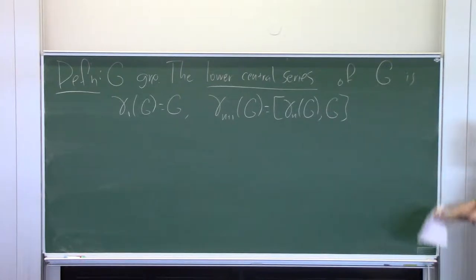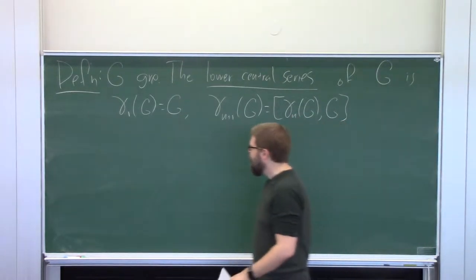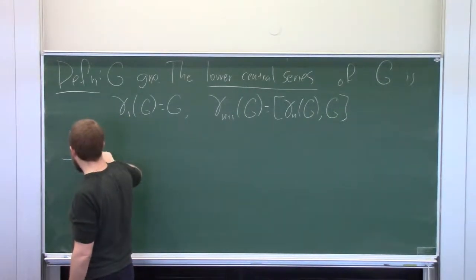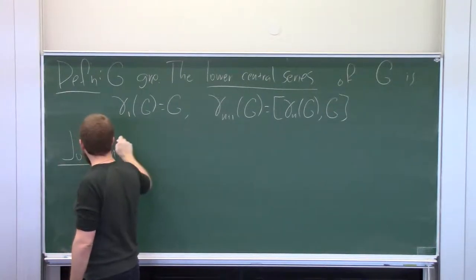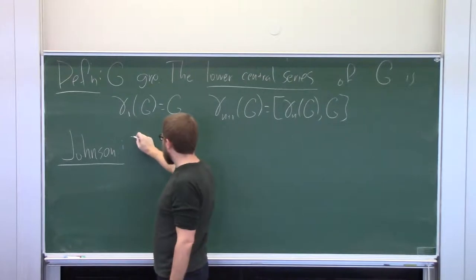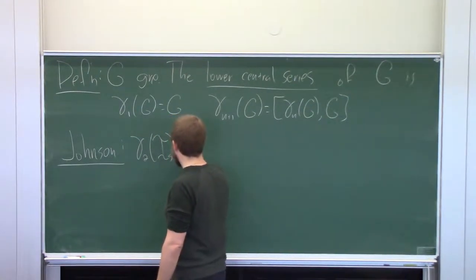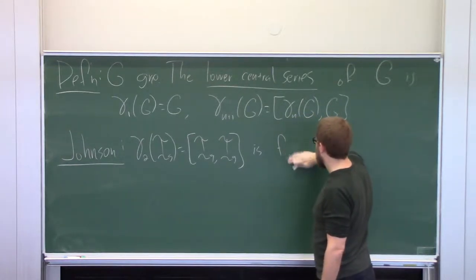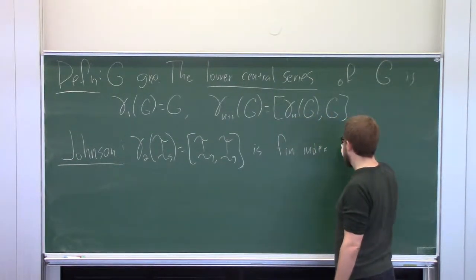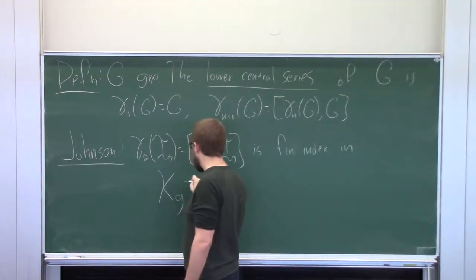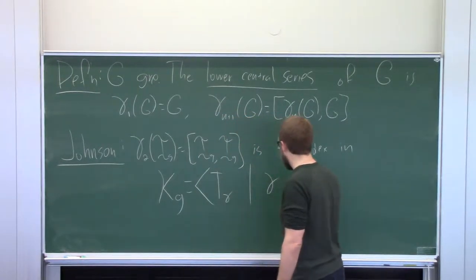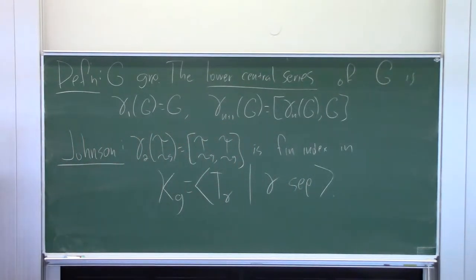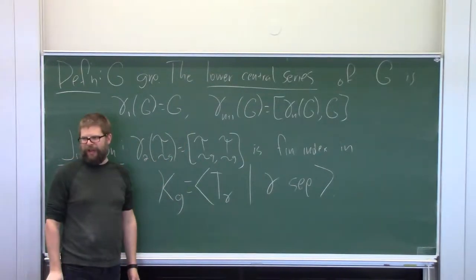One result that makes these groups feel more concrete is a theorem of Johnson, which sheds light on what the first one looks like. He showed that if you look at the commutator subgroup gamma_2 of Torelli, that is finite index in the group K_g — which is the subgroup generated by Dehn twists about separating curves. So separating curves in general are not enough to generate the Torelli group; they generate this infinite-index subgroup, which is more or less the commutator subgroup. Any finiteness properties of K_g are also finiteness properties of the commutator subgroup.